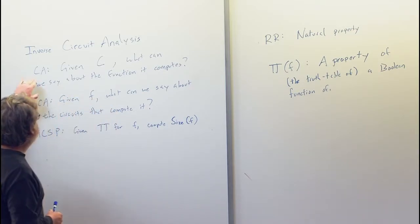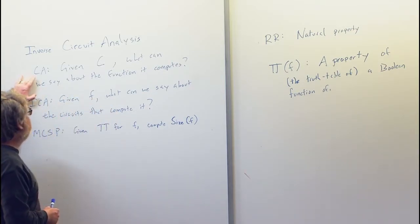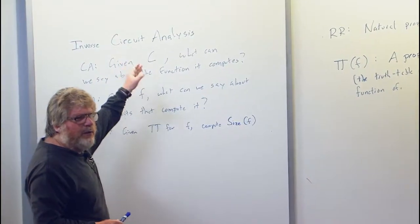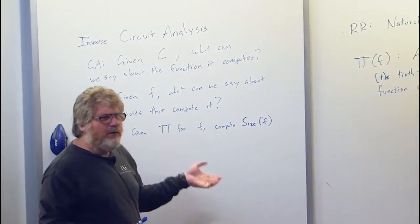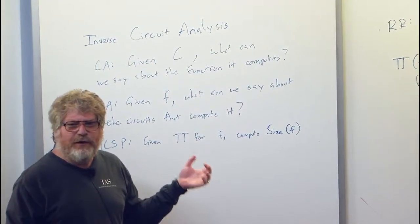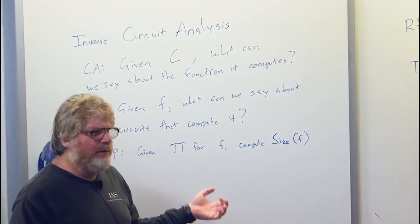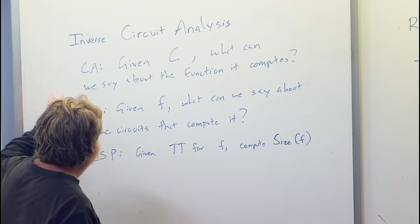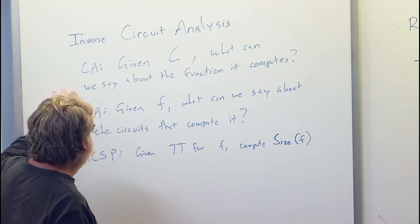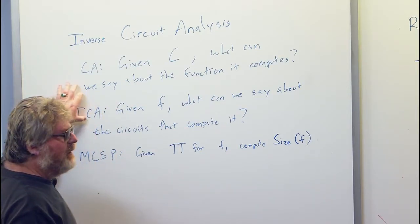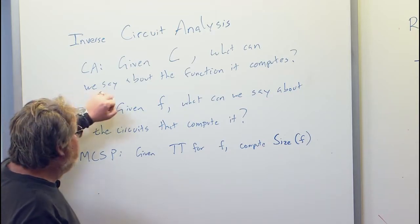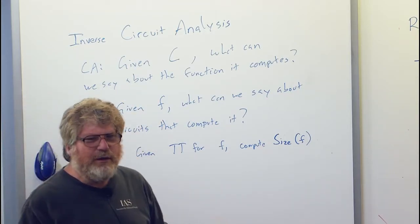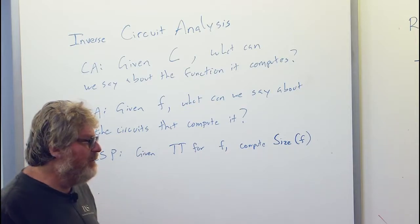The first category is circuit analysis: you're given a circuit C, and you want to know what you can say about the function the circuit computes. The second category is inverse circuit analysis: you're given a function, and you're trying to say what we can say about the circuits that compute that function.